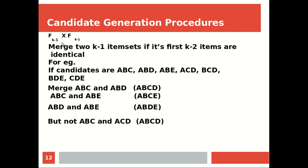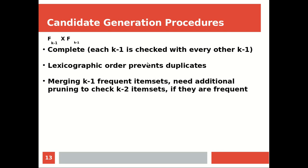پھر ایک اور طریقہ ہے جو ہے Fk-1 cross Fk-1 — آپ دو k-1 item sets کو merge کریں، اور تب ہی merge کریں جب ان کے first k-2 elements identical ہوں۔ یہ بھی complete ہے کیونکہ آپ k-1 کو augment کر کے match کر رہے ہو دوسرے k-1 frequent item sets سے، lexicographic order میں رکھو تاکہ duplicates avoid ہوں۔ Merge کرتے وقت additional pruning کی ضرورت ہوگی to check your k-2 itemsets to see if they are frequent or not.